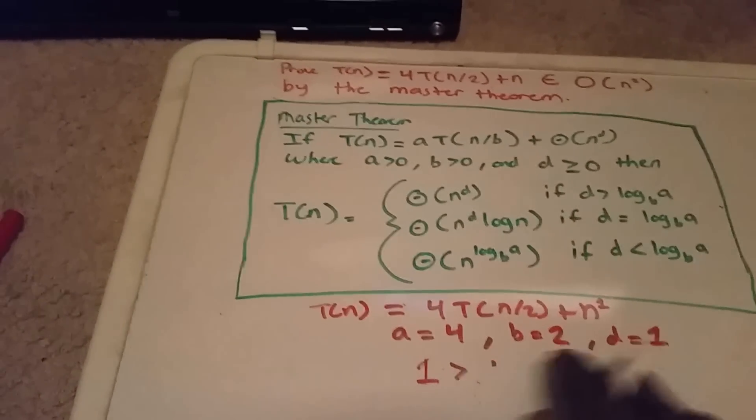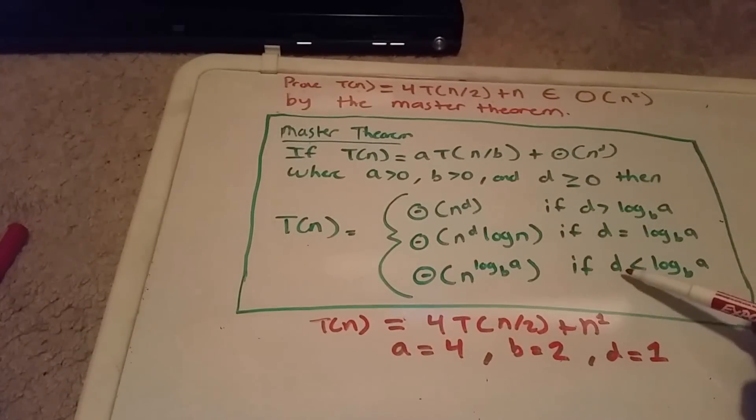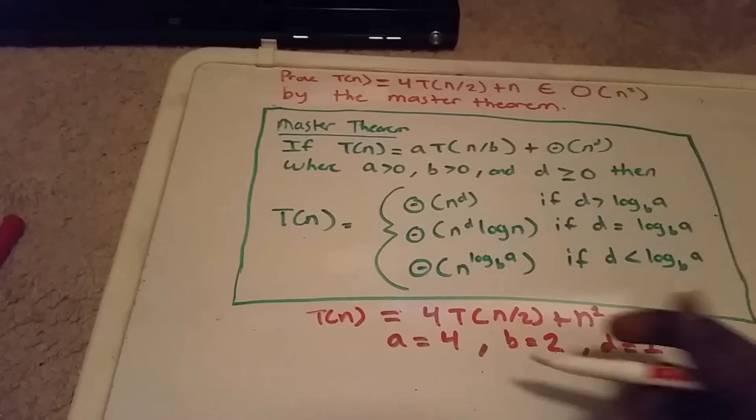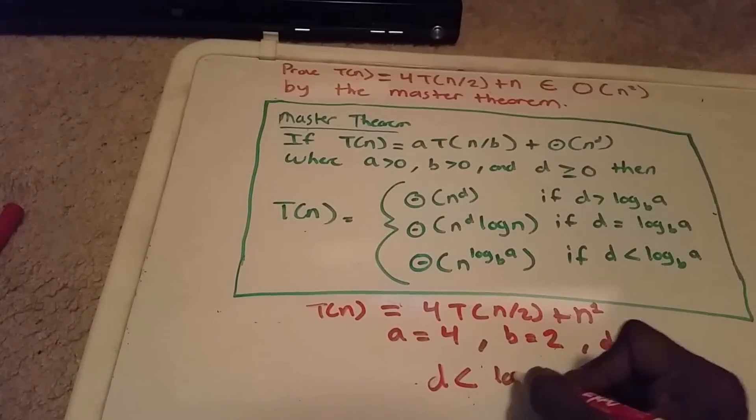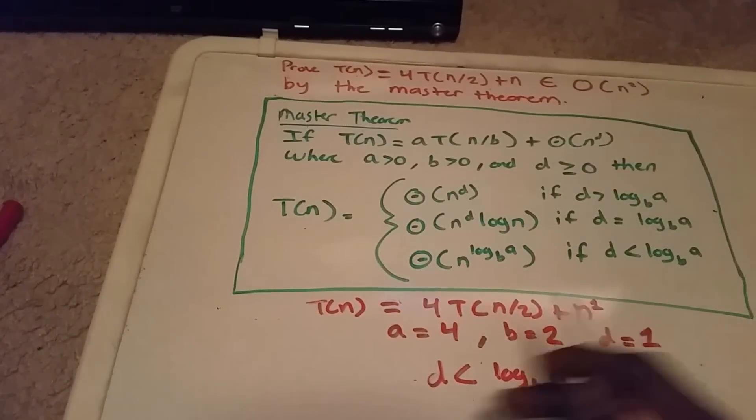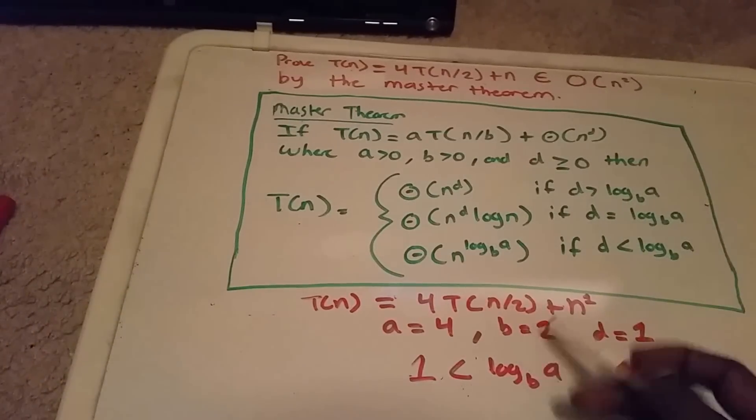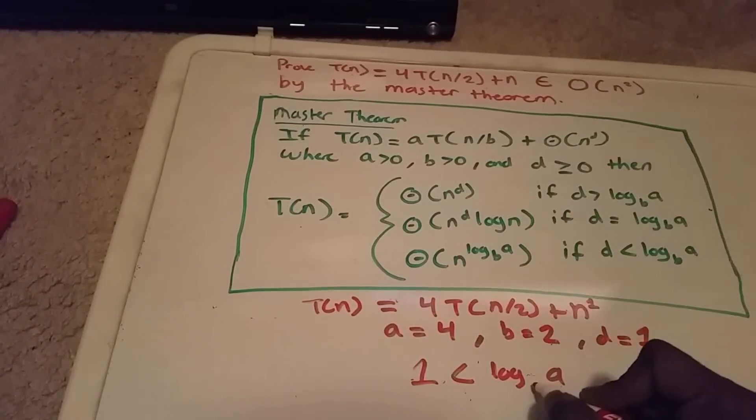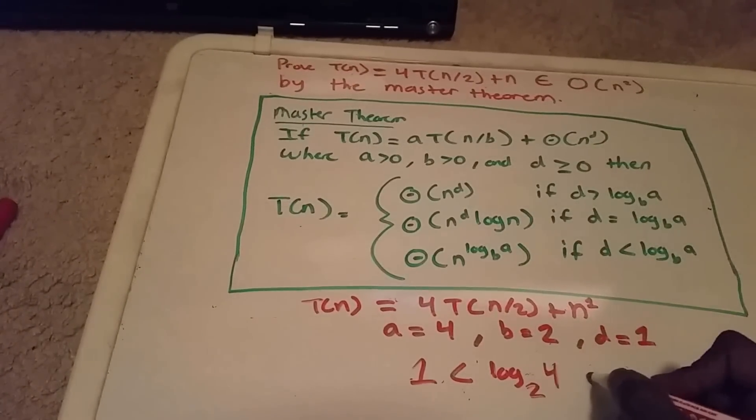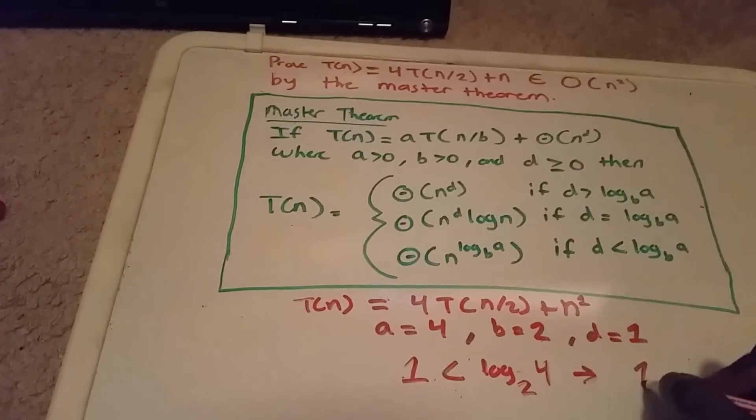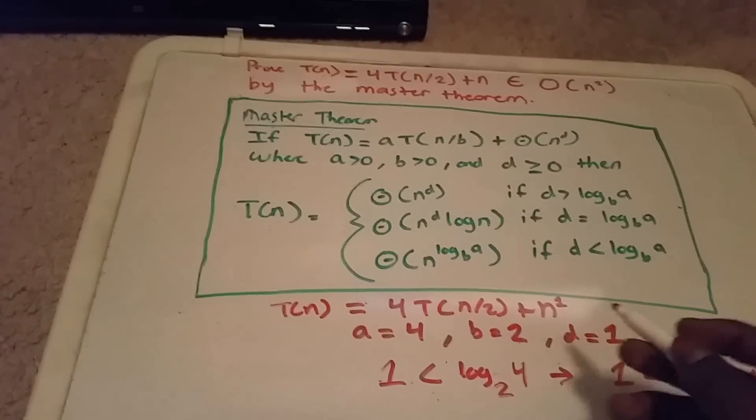Let's try this one here. We saw that it was less than, so let's check if d is less than log base b of a. Here d equals 1, b equals 2, and a equals 4. We get 1 is less than 2, which is true. Therefore,